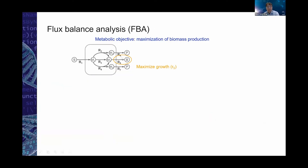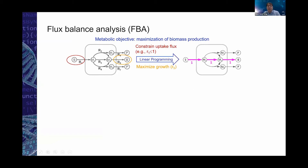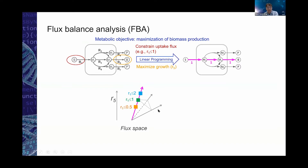In the FBA approach, we set up a goal — the typical objective function is maximization of biomass. To prevent unbounded solutions, we constrain the uptake fluxes, typically the exchange fluxes. Under this constraint, we solve the problem by linear programming. In this example, maximization of biomass is realized by taking up substrate S along a specific pathway. This corresponds to one particular solution on the edge of the flux cone. When we normalize fluxes into yield space, multiple solutions in flux space can correspond to the same single point in yield space.